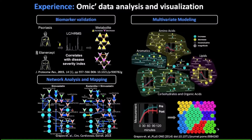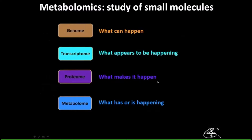My experience in metabolomics and omic data analysis and visualization is varied. I've been interested in things like biomarker discovery and validation with metabolomics, proteomics, and genomics. I have a big interest in network analysis and visualization, and also this idea of network mapping, which I'll talk more about at the end. All along I've been doing multivariate modeling and visualization to analyze this data in a cohesive, holistic approach.